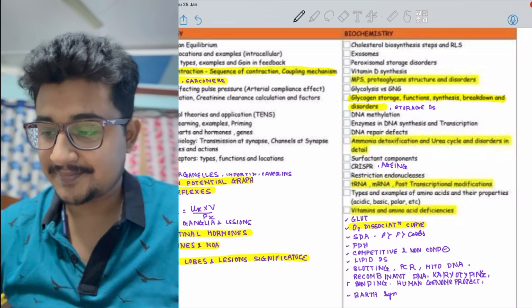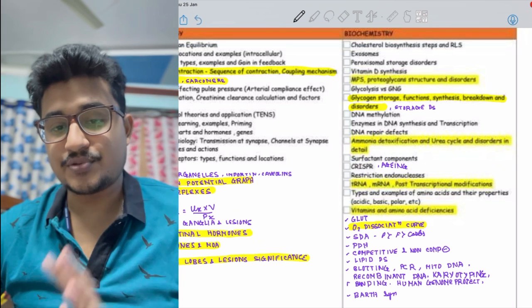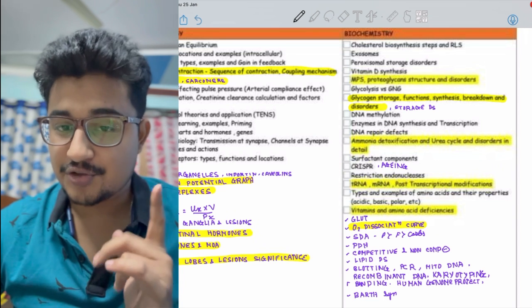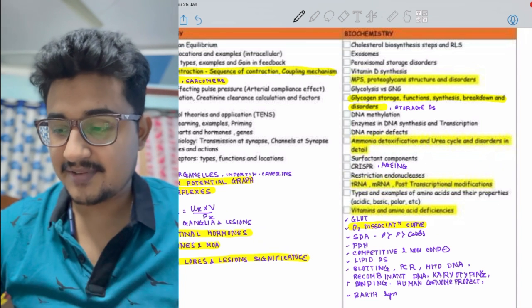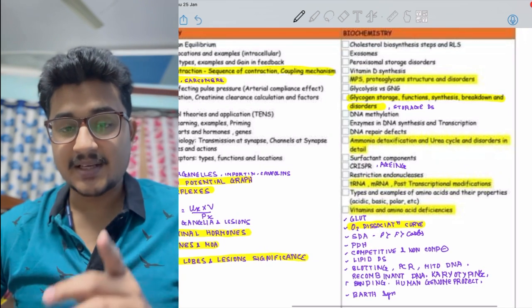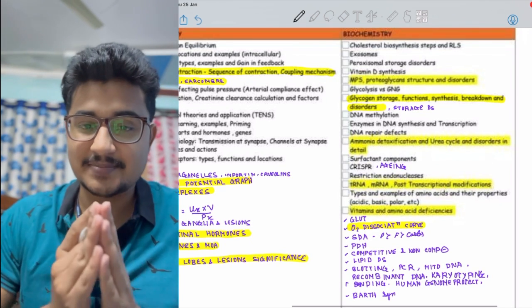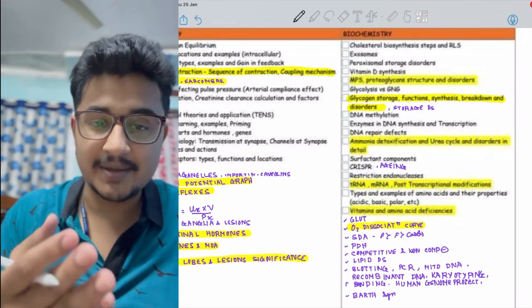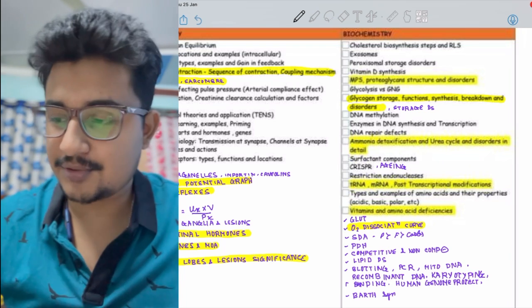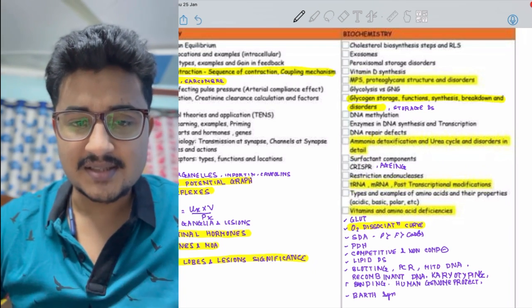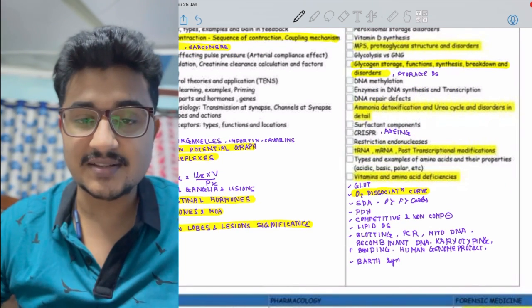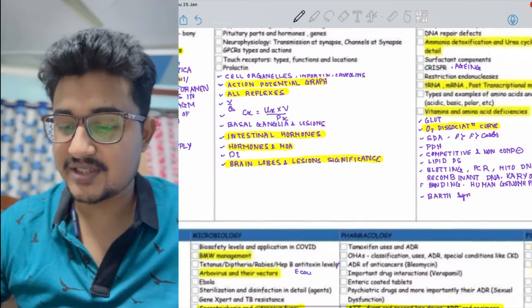Glucose transporters are also asked, oxygen dissociation curve is asked. As I said, in INICET most important is genetics. You could be asked the PCR types, human genome project, everything about banding related to genetics. The CRISPR-Cas9 has been a marvel, and the person who invented this got the Nobel Prize, probably in 2016-18. Barth syndrome was asked in this year's INICET, so it's new.